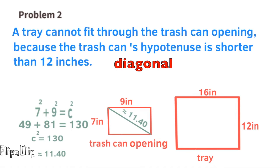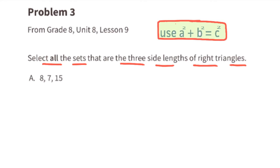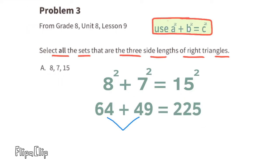Problem number three, from eighth grade Unit 8 Lesson 9: select all the sets that are the three side lengths of right triangles. We can do this by using the Pythagorean theorem: a² + b² = c². For set A, the side lengths are 8, 7, and 15. We'll use 15 as the hypotenuse: 8² + 7² = 15². Eight squared is 64, seven squared is 49, and 15 squared is 225. Since 64 plus 49 does not equal 225, this cannot be a set of three side lengths for a right triangle.